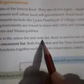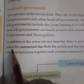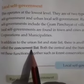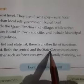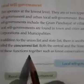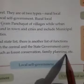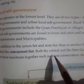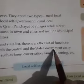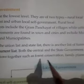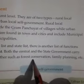In addition to the union list and state list, there is another list of functions called the concurrent list. Both the central and the state government carry out these functions together, such as forest conservation and family planning.